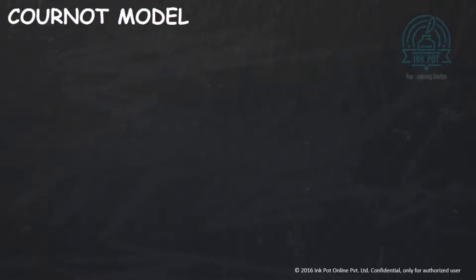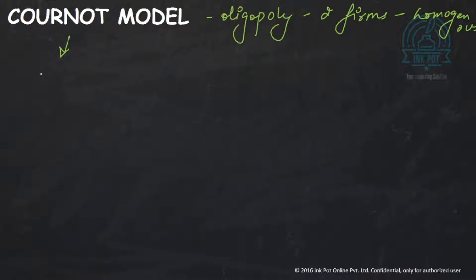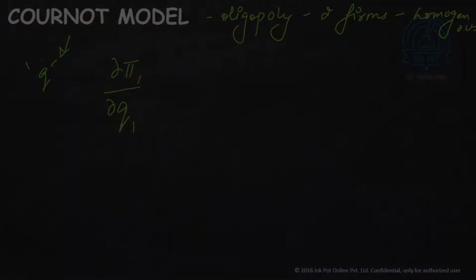We're starting with the Cournot Equilibrium. Cournot Equilibrium is also in the same oligopoly model that we discussed in the Bertrand model in the last video, which has two firms selling a homogeneous product. The difference between Bertrand and Cournot is that in Bertrand, price was the choice variable, whereas in Cournot, Q is the choice variable. So we have to differentiate profit with respect to Q, not with respect to price.